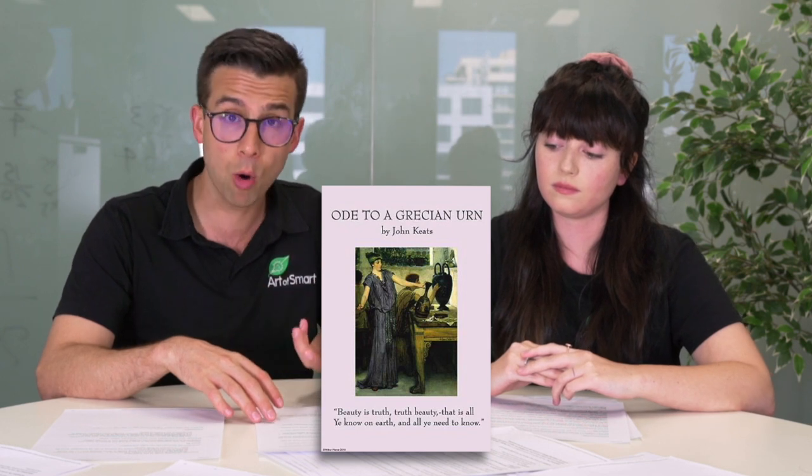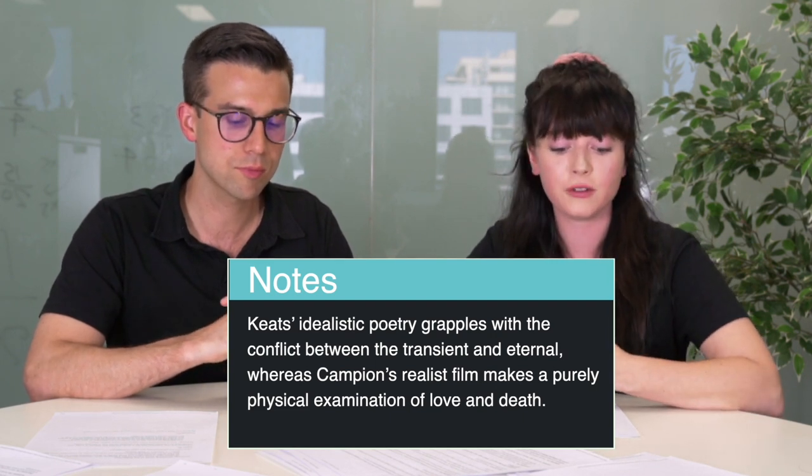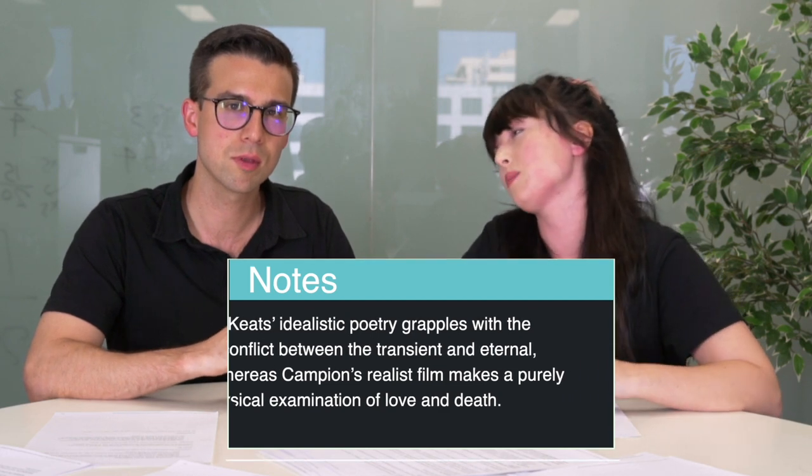For this, we're going to be looking at Keats' Grecian Urn poem and comparing it with the film Bright Star and the relationship that Keats and Fanny have. The topic sentence we're exploring is: Keats' idealistic poetry grapples with the conflict between the transient and eternal, whereas Campion's realist film makes a purely physical examination of love and death. Keats shows this conflict between transient and eternal, while the film does something different — it's much more realistic as opposed to idealistic.